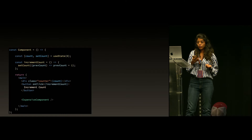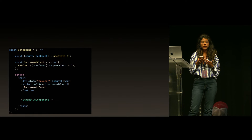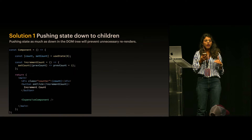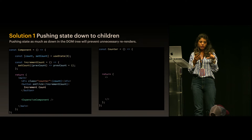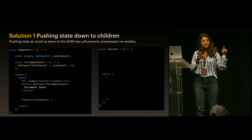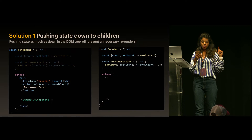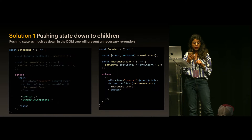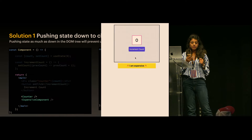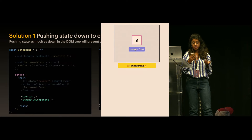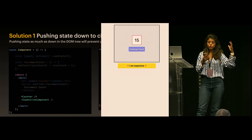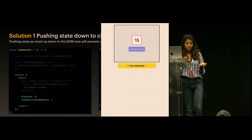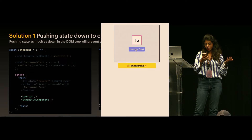There can be multiple ways to solve this. One solution is to push state down to the children. We can create a separate counter component and move all the code related to the counter into it, including the state. Now when we run this and increment, it works pretty decently. We've solved it by pushing state down, and always remember: doing nothing is better than doing something — if you can move state down, that is the best way to solve this problem.